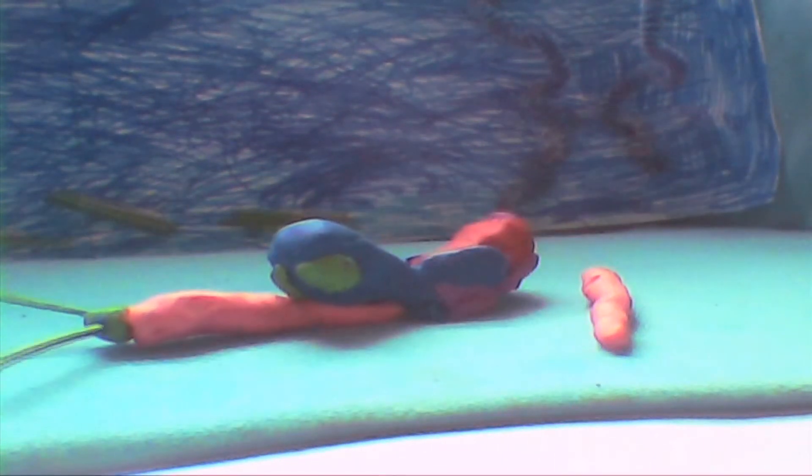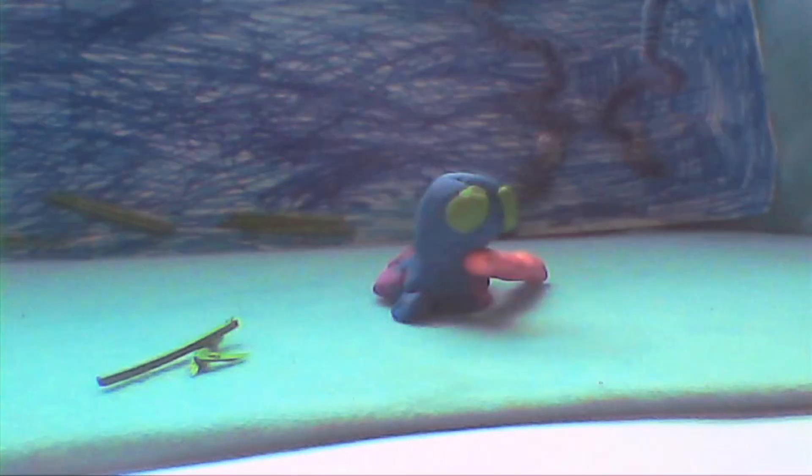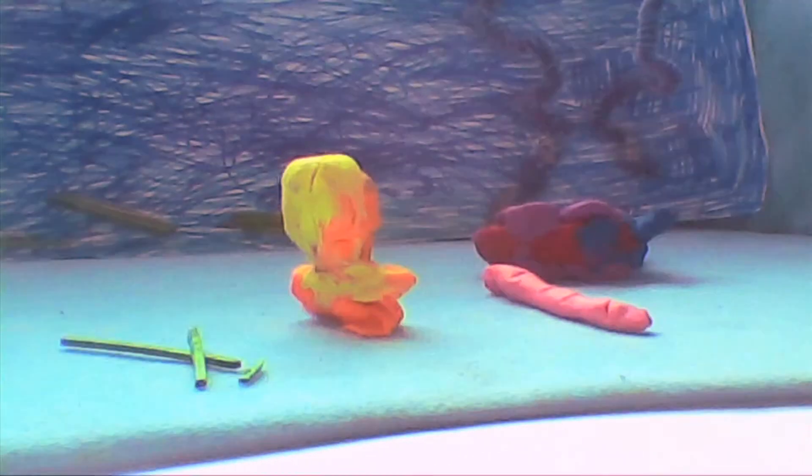There once was a jelly mouse who was eating his favourite food, which was prawns. Then a curious swimmer swam up close to him and accidentally bumped into him.